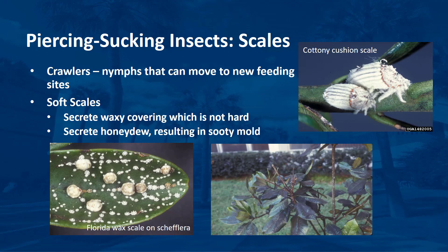T-scales are an example of armored scales. Young nymphs, also known as crawlers, move around to find new feeding sites. After they begin feeding, they remain in that same location for most of their lifespan. Soft scales also secrete a waxy covering over themselves. This covering is not hard and attaches to the scale's body. They secrete honeydew, which may result in sooty mold. Soft scales are different colors, sizes, and shapes. The scales may move around in any of their life stages. Florida wax scale are soft scales.